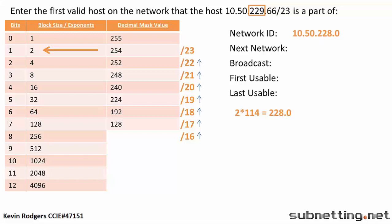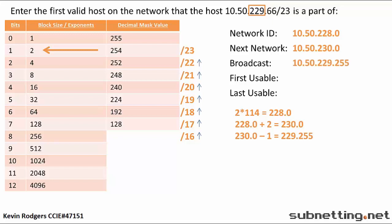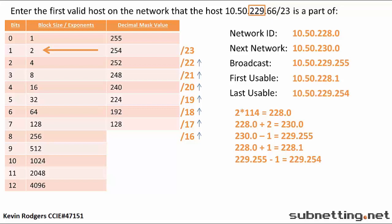We can now find our next network. 228, which is our network ID, plus the block size of 2 equals 230. The next network is 10.50.230.0. Next up is the broadcast address. To find the broadcast address, we simply take the next network and subtract 1. Our broadcast address is 10.50.229.255. To find the first usable IP on our network, we take our network ID and add 1. Our first usable IP is 10.50.228.1. And finally, we will also find the last IP, which is our broadcast address minus 1. Our last usable IP is 10.50.229.254.